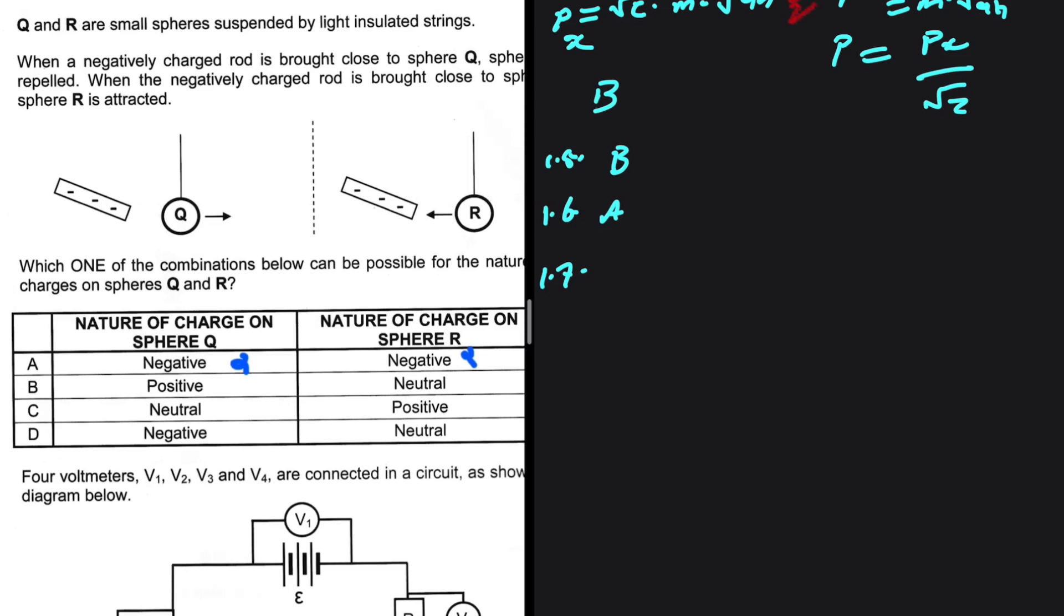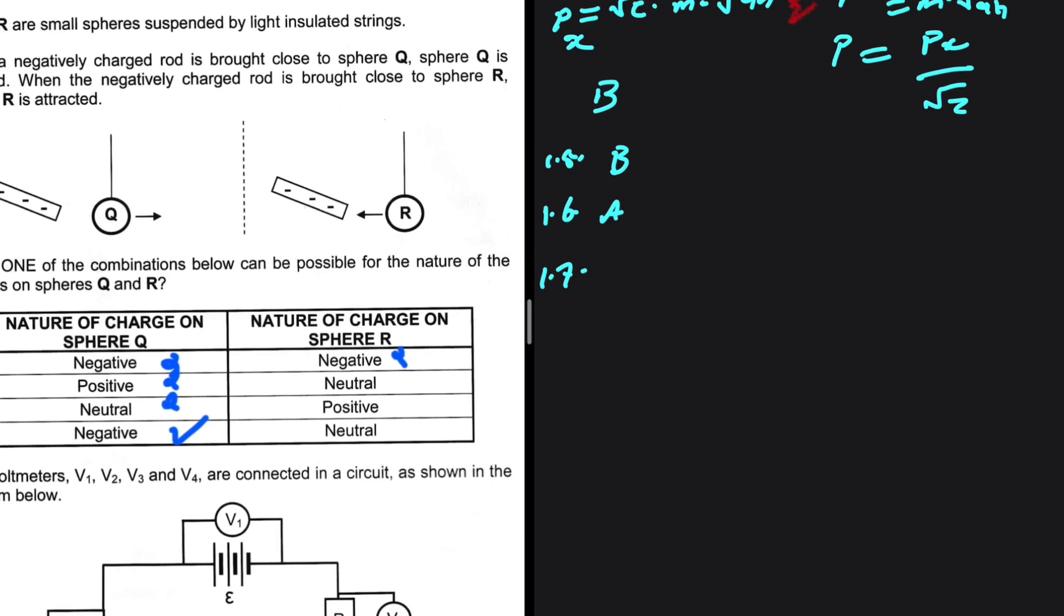B says Q is positive. If Q is positive, it should not move away. It should move close. Opposite charges attract, so this cannot be correct. Let's take a look at C. C says neutral. C cannot be correct. Why? Because if you have a negative and a neutral, they attract. If you have a negative and a positive, they attract. So the mere fact that it is moving away means that it is not neutral. If it was neutral, it was going to move towards the rod. So C is not correct. Obviously, D should be correct. Let's look at the other side. It says R is neutral and is being attracted by the rod, so that makes sense. 1.7, the answer is D.